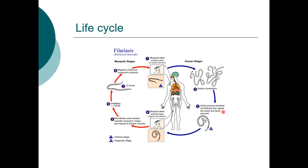On stage four, another mosquito takes a blood meal, ingesting the microfilariae. For this life cycle to complete, you need an intermediate host — a mosquito — just as in malaria. The mosquito acts as an intermediate host for growth of the microfilariae.